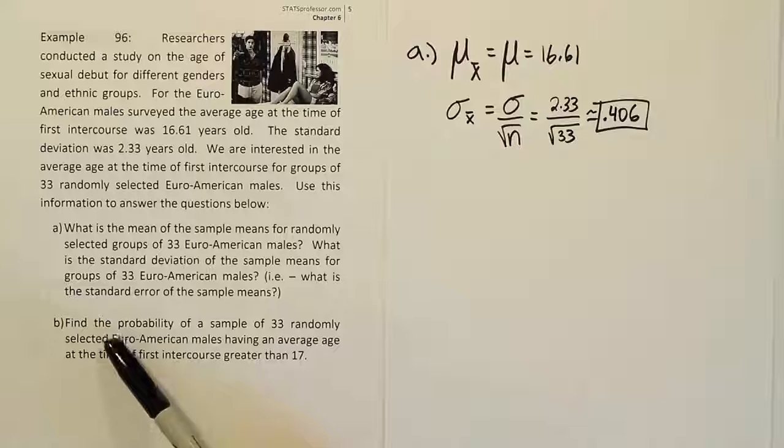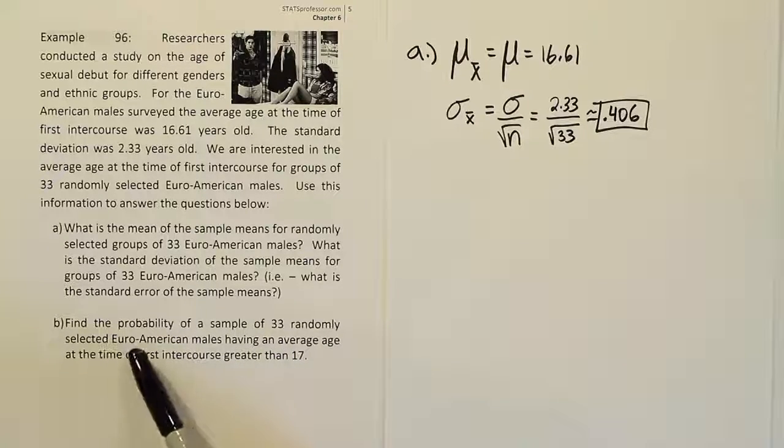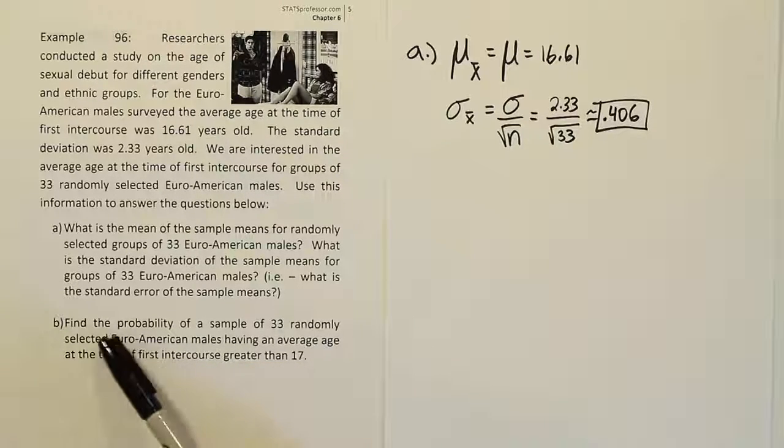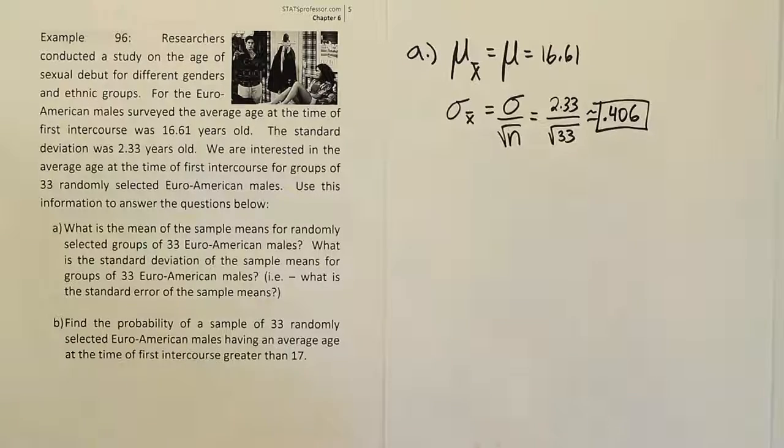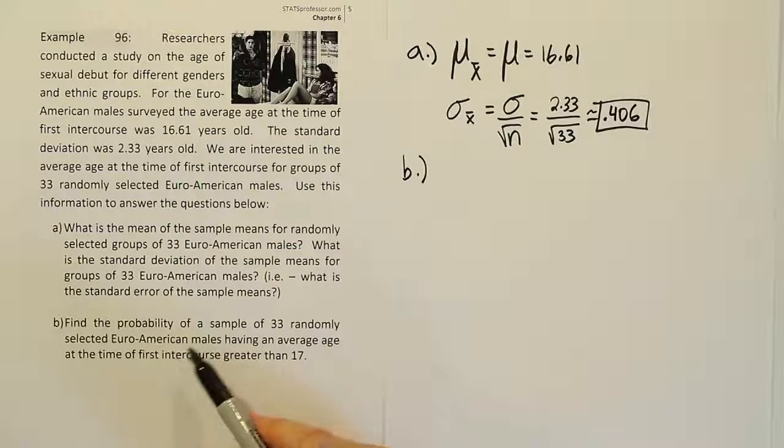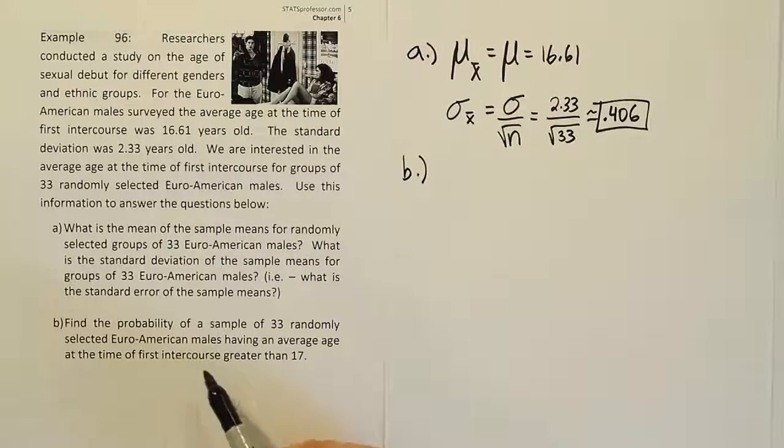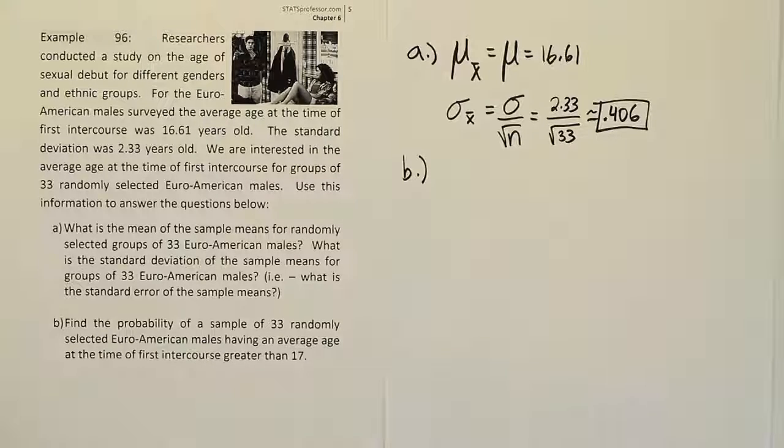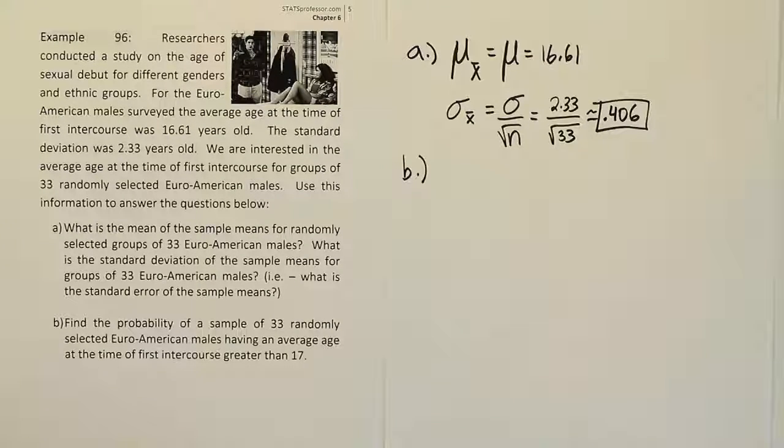In part B, it says, find the probability of a sample of 33 randomly selected Euro-American males having an average age at the time of first intercourse greater than 17. So this is a probability question. We're looking for the probability of a sample of 33 randomly selected European males having an average age at the time of first intercourse greater than 17. To do this problem, I would like to know how the data is distributed, ideally, because if it was normally distributed, I should be able to use the bell curve, and I know how to do that. That's pretty easy.